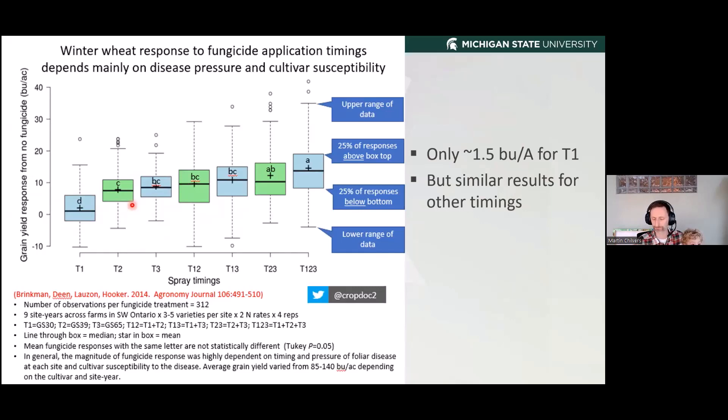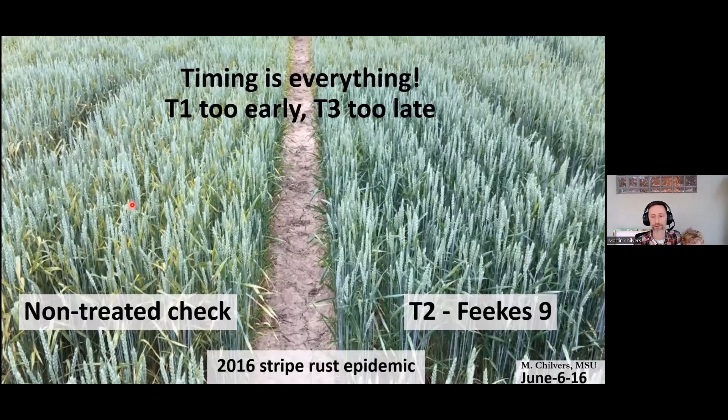Timing is everything. I mentioned the stripe rust epidemic of 2016, and here's a great photo from that. We've got a non-treated check that received no fungicide, and next to it a plot that received a fungicide at the flag leaf timing. If you'd bought into spraying early and then at flowering, that wouldn't have worked for that stripe rust epidemic — you really had to have protection on the flag leaf. It's been about eight years since that really severe epidemic, but we need to be mindful of conditions and maybe adjust plans accordingly.